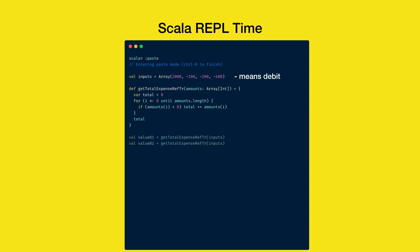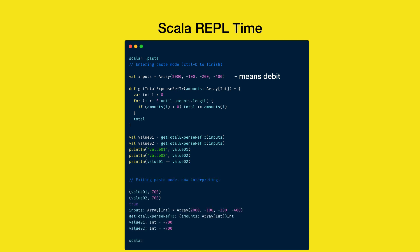Next, we call it twice with the same inputs and store the results in value01 and value02 variables. We print the values on the console and also print if they are equal. As we observe carefully, value01 and value02 have exactly the same values, and therefore we get true on that line.